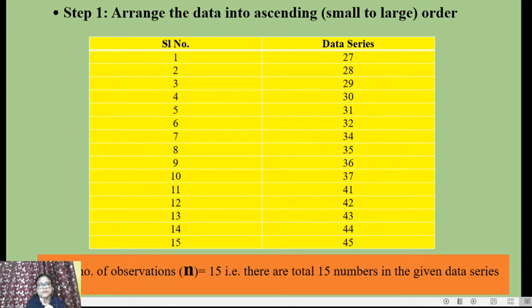First, we need to arrange the data into ascending order — that is, from small to large. The data has been arranged, and the total number of observations is 15.